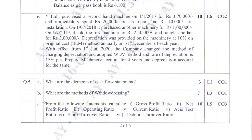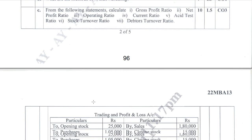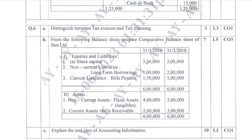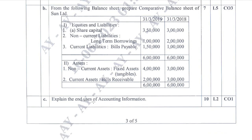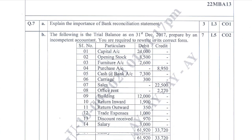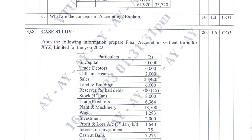The ratio analysis chapter is very easy — unit 4 — and you can't escape it. It will come for 10 marks and one theory question for 3 marks. Question number 6 is again a comparative balance sheet, and the last compulsory question is a case study.